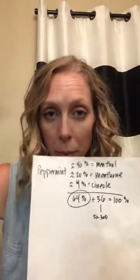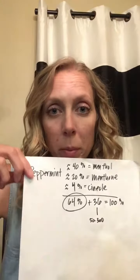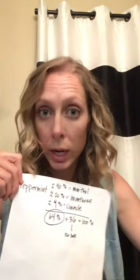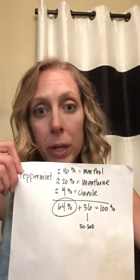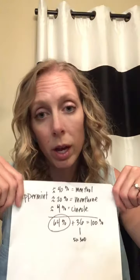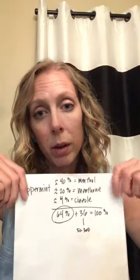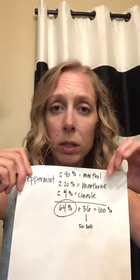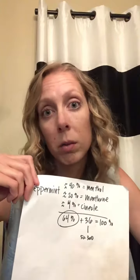So we're going to look at peppermint. Peppermint has a couple of chemical constituents that make up the majority of peppermint. One is menthol, one is menthane, and one is cineol. And it's approximately 40%, approximately 30%, approximately 20%, approximately 4%. And there are other chemical constituents in there that make up a good majority.